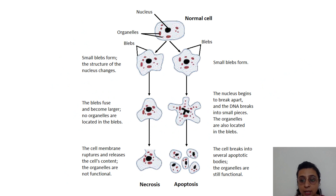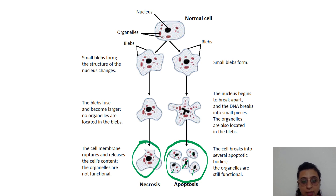Apoptotic bodies retain their own organelles, which are still functional. Whereas in necrosis, everything is destroyed — the organelles are not functioning.